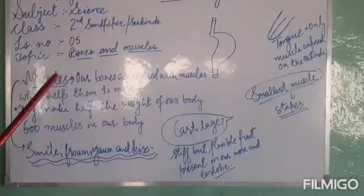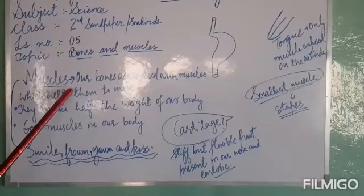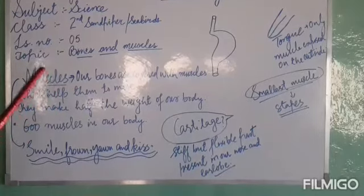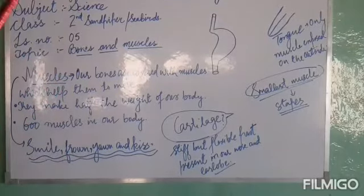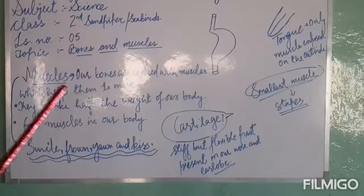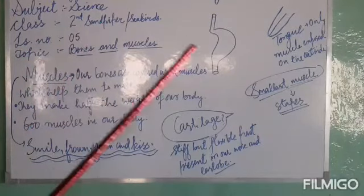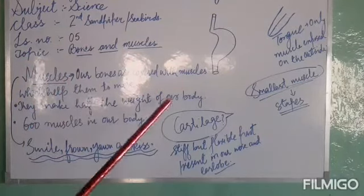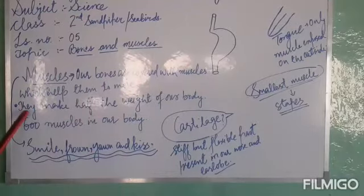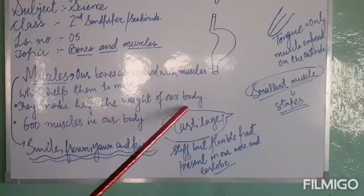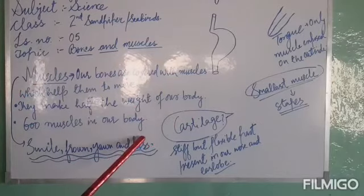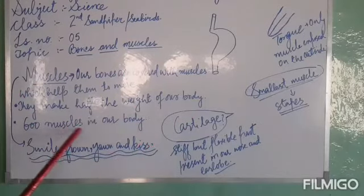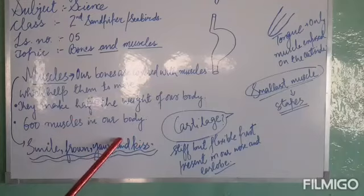Now, dear kids, let us learn about the muscles. Our bones cannot move on their own — they are covered with muscles which help them to move. Muscles make up nearly half the weight of our body. There are about 600 muscles in our body.